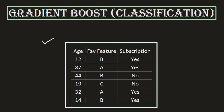We have a simple dummy dataset with two feature columns: the first is the age of the user, and the second is the favorite feature of the application the user is using. Within the target column, we need to predict whether the user will take the subscription or not. We are going to use this dataset to understand the gradient boost workflow in case of a classification problem.